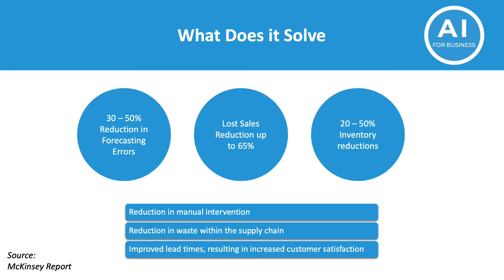And I will show you now what it solves. The results are significant. Because it's able to analyze a vast variety of data, the new system can dynamically respond to changes in the data sets and can discover complex relationships and update the forecast demands much better. According to a report from McKinsey, the three key solutions are a 30-50% reduction in forecasting errors, up to 65% lost sales reductions, and 20-50% of inventory reductions.